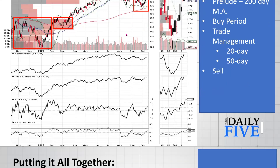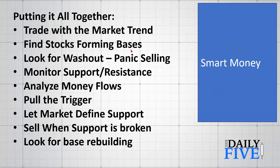Let's put it all together. Trade with the market trend. Find stocks forming bases and look for that washout panic selling as a prelude to money starting to move in. Monitor support and resistance - the more indicators clustered around a price area, the better. Analyze money flows: accumulation-distribution and on-balance volume. Then pull the trigger and let the market define support. In Apple's case it was the 20-day moving average; it could be the 50-day or a volume-by-price bar. Sell when that support is broken, then look for base rebuilding and start the process over - that's what the smart money does.